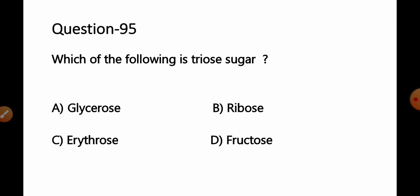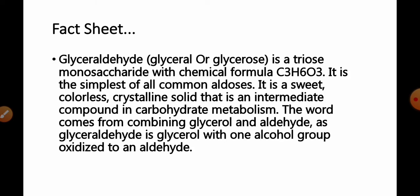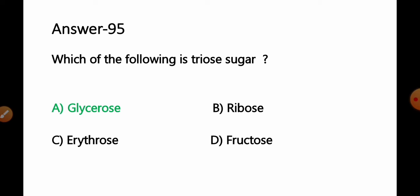Question 95: Which of the following is a triose sugar? A) Glycerose, B) Ribose, C) Erythrose, D) Fructose. From the previous question information, we know that glycerose is an example of a triose monosaccharide or triose sugar. Option A, glycerose, is the correct answer.